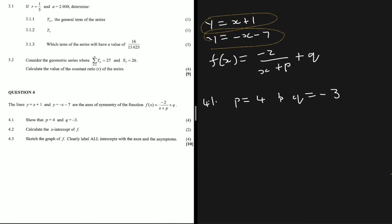What you can do with these two equations is equate them, and then you can find the x-value of the vertical asymptote. From the vertical asymptote you can then find p, and from the y-value you can then find q.